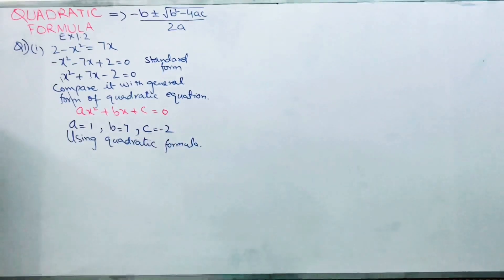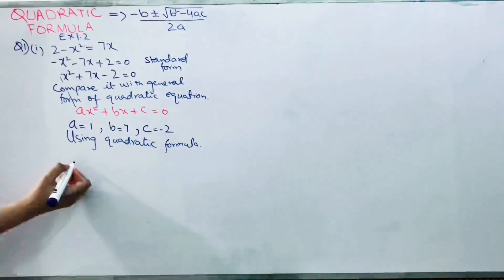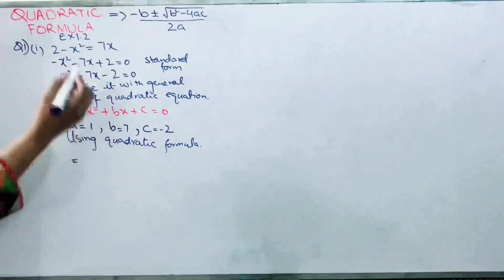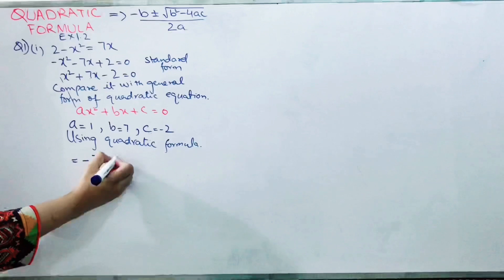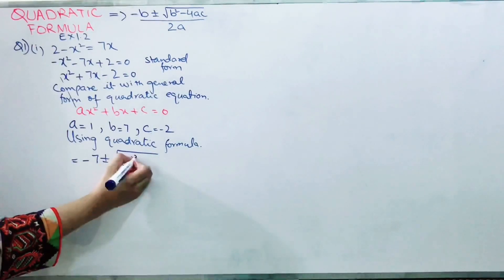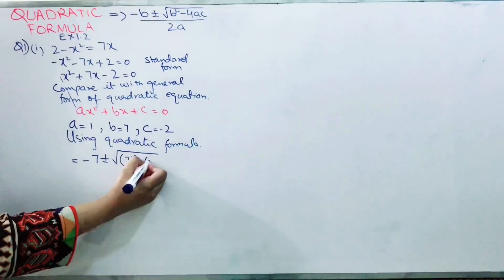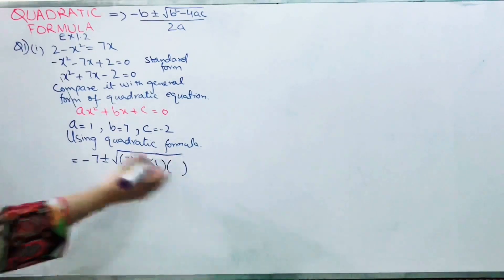you just have to substitute your values in this formula. So first is minus b. Minus b is minus 7, plus minus under root b square—7 square—minus 4ac. So 4 times a is 1, and c is minus 2, all by 2a, where a is 1.